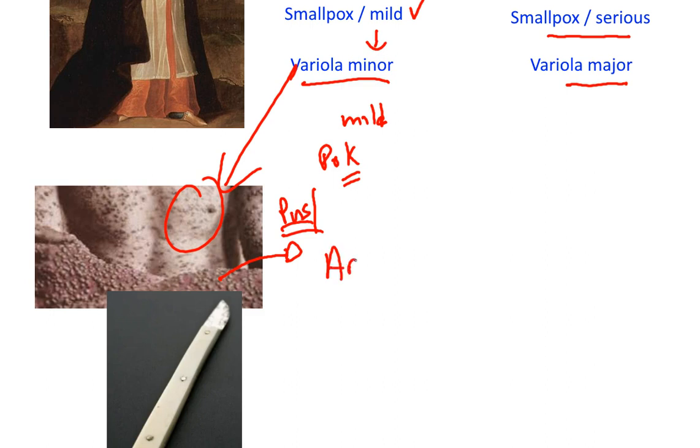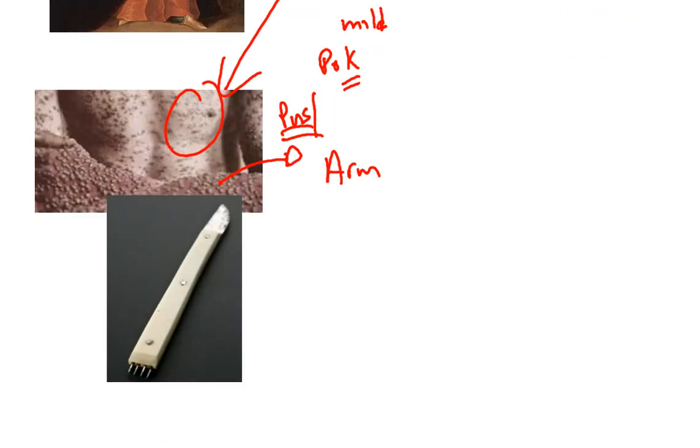A person's arm would then be scarred, scratched, using an instrument like this one, and then you would inoculate, or as we say, vaccinate, with the pus.